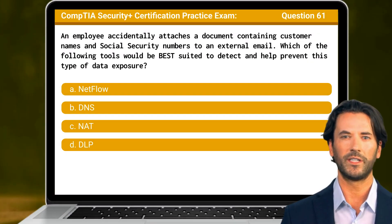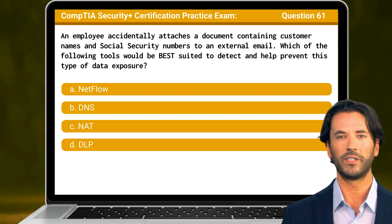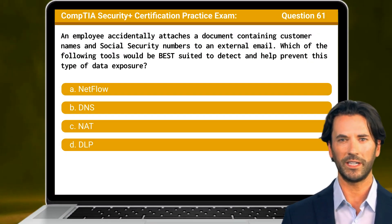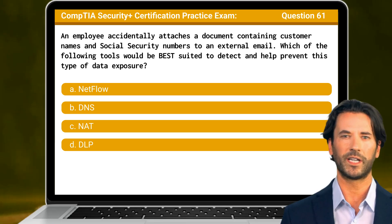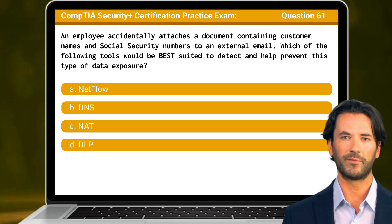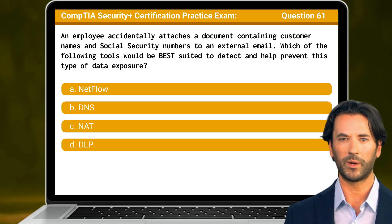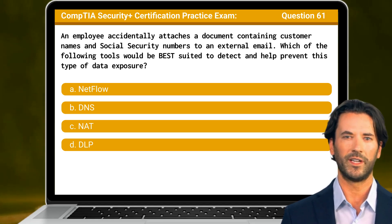Question 61. An employee accidentally attaches a document containing customer names and social security numbers to an external email. Which of the following tools would be best suited to detect and help prevent this type of data exposure?